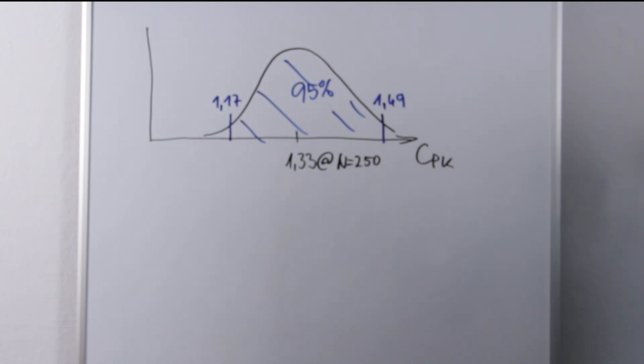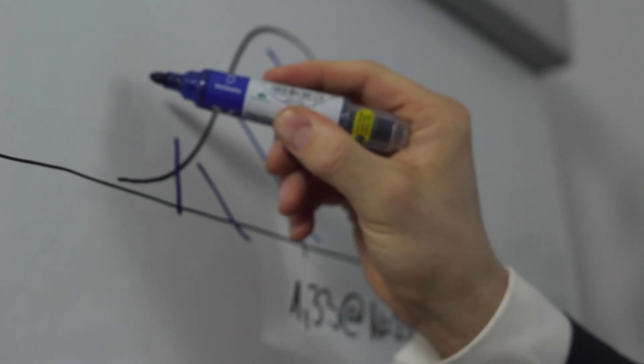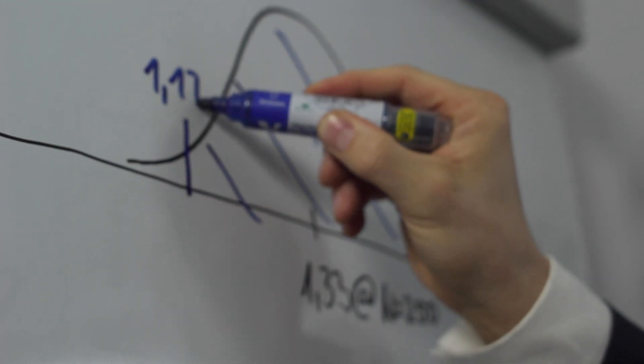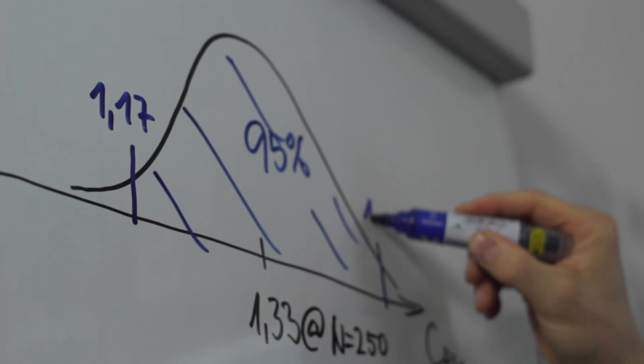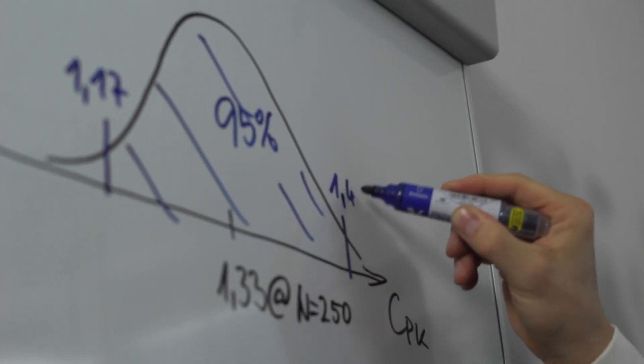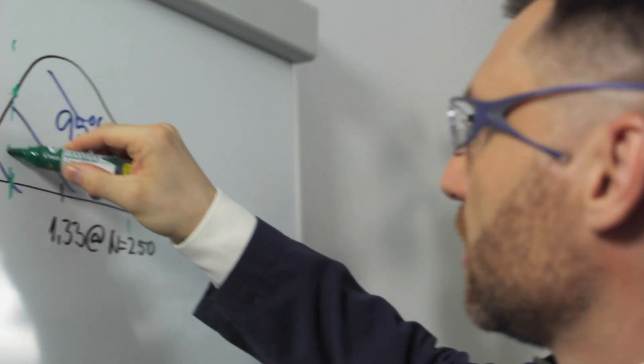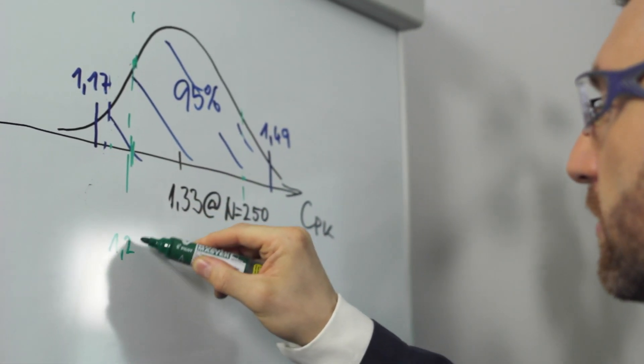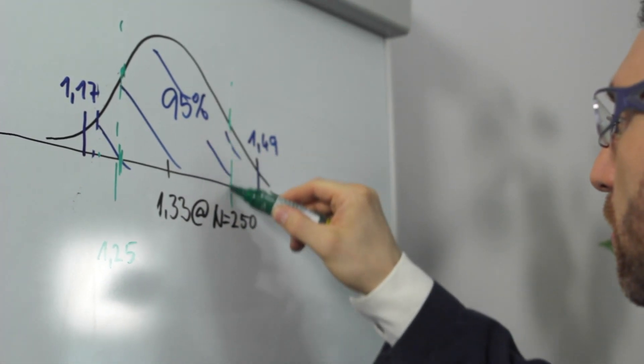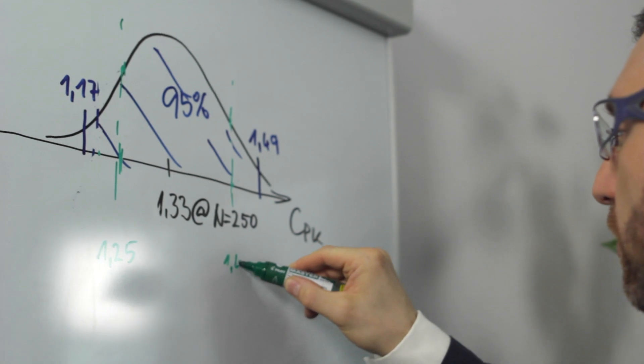For example, if the CPK is 1.33 calculated on 250 observations of a normally distributed process, the 95% confidence bounds are 1.17 and 1.49. It means that if one repeats the experiment, the result can easily be 1.25 or 1.4 for the very same process under the very same circumstances.